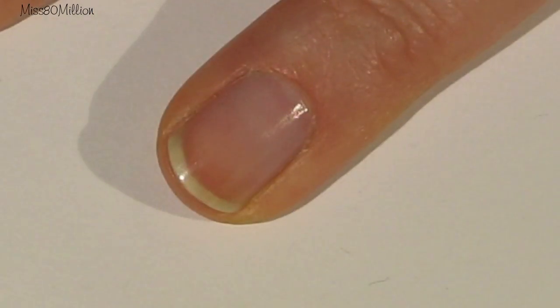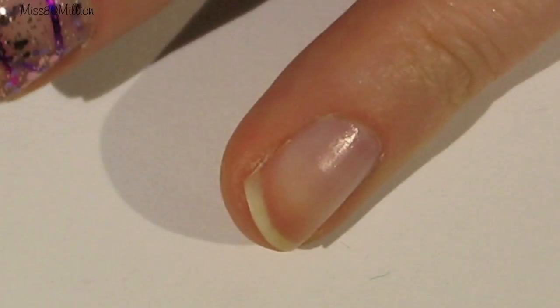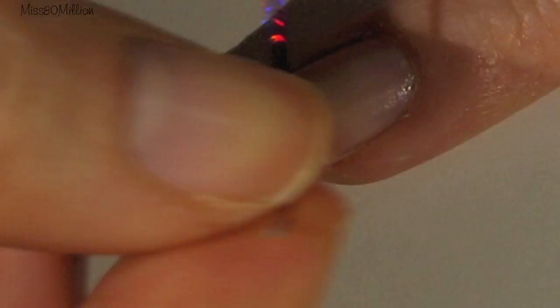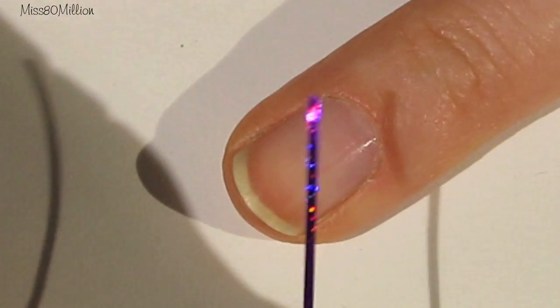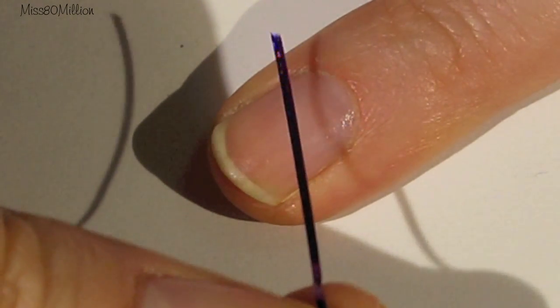I've already applied my base coat and allowed that to dry. Next, I'm going to take a piece of one of the colors of my nail tape. I'm starting with the purple and I'm going to lay it across my nail diagonally.